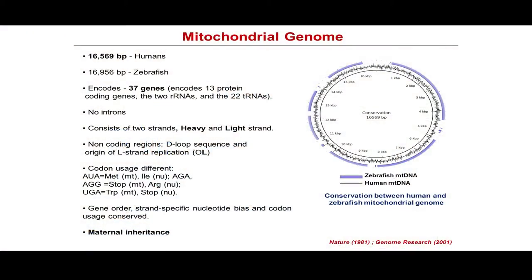The mitochondrial genome is roughly 16.5 kb in humans and 16.9 kb in zebrafish. It encodes 37 genes, of which 13 are protein-coding genes responsible for oxidative phosphorylation, 22 encode tRNAs, and 2 are ribosomal RNA genes. The mitochondrial genome has no introns; the only non-coding region is the D-loop, which contains the origin of replication. It has two strands — the heavy strand and the light strand — and notably the codon usage differs between the nuclear and mitochondrial genomes. For example, UGA codes for tryptophan in the mitochondrial code but is a stop codon in the nuclear code. Gene order, strand-specific nucleotide bias, and codon usage are conserved across species.